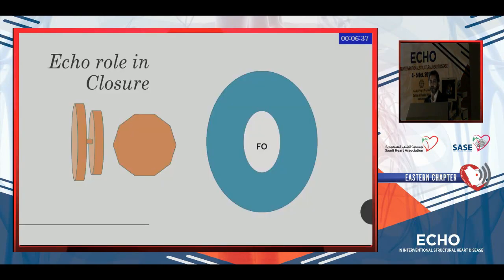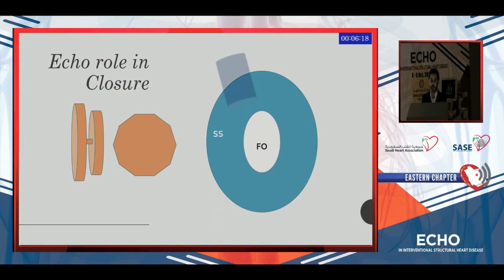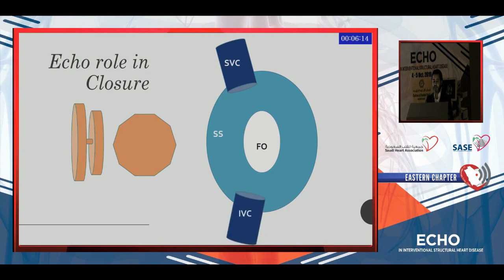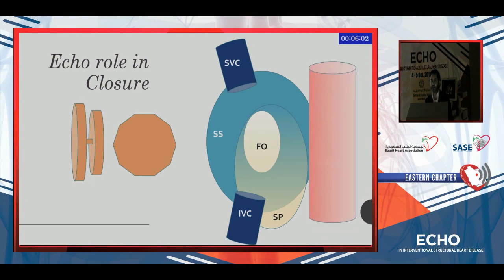Now we'll talk about echo-guided closure. The PFO closure device is a two-disc device connected with a thin membrane — usually a larger right atrial disc and a smaller left atrial disc. The fossa ovalis is shown here, the blue structure is the thick septum secundum, the SVC is upward, and the IVC is inferior. The septum primum is on the left side behind the septum secundum when viewed from the RA perspective. The aorta is anterior and there is the posterior atrial wall. The device will sit between the two membranes — between the septum secundum and septum primum — and must be large enough to have a good grip of both.